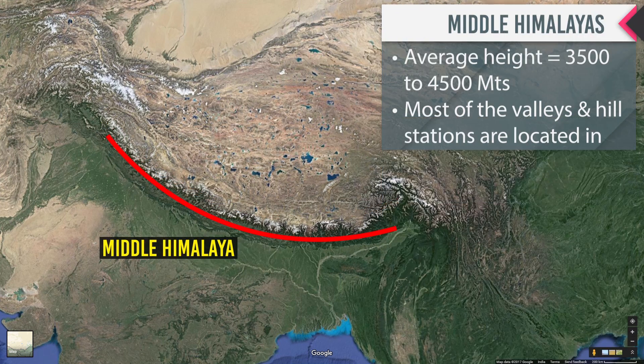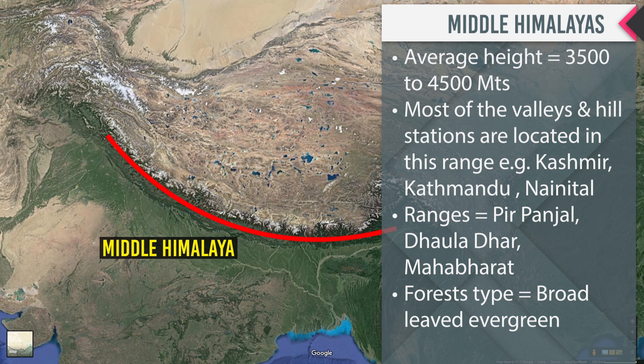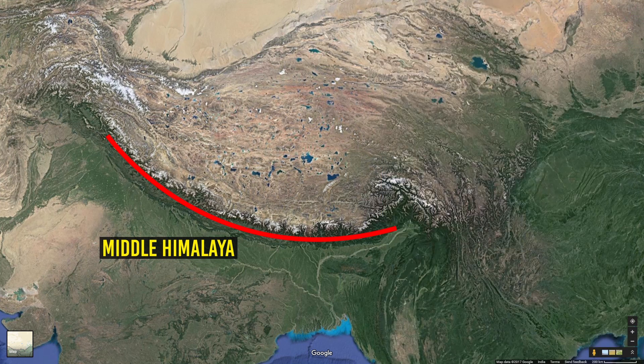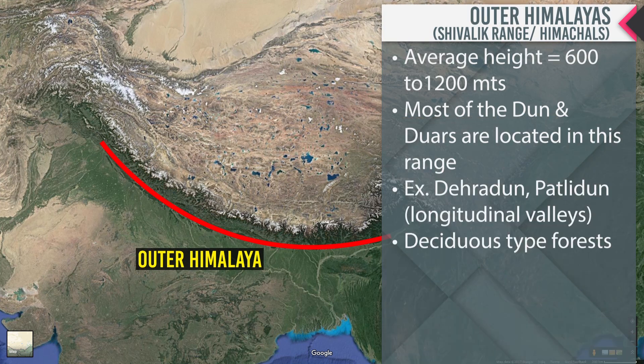The Middle Himalaya has an average height of 3500 to 4500 meters. Most of the valleys and hill stations are located in this range — Kashmir, Kathmandu, and Nainital are all located within the Middle Himalaya range. Its ranges include Pirpanjal, Dhauladhar, and Mahabharat. The Middle Himalaya supports broad-leaved evergreen forests. The outer Himalayas, otherwise known as the Shivalik Range or Himachals, follow.